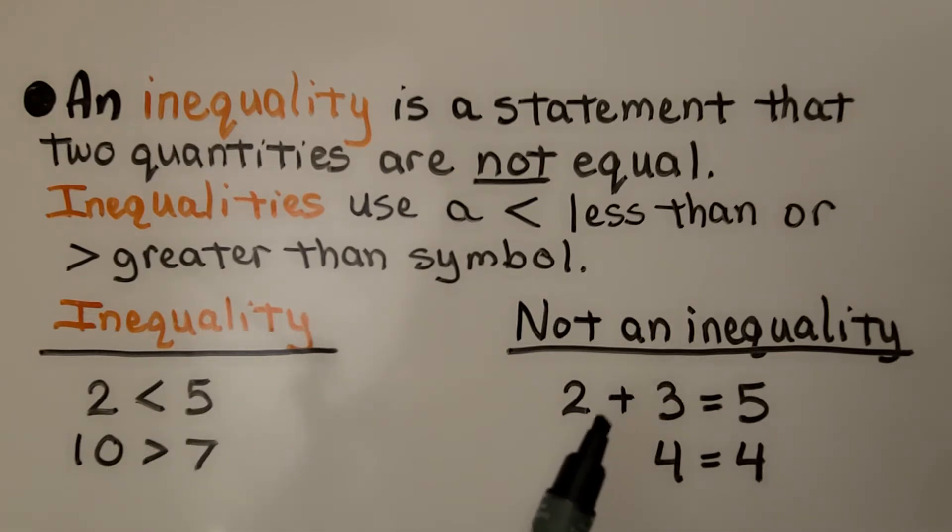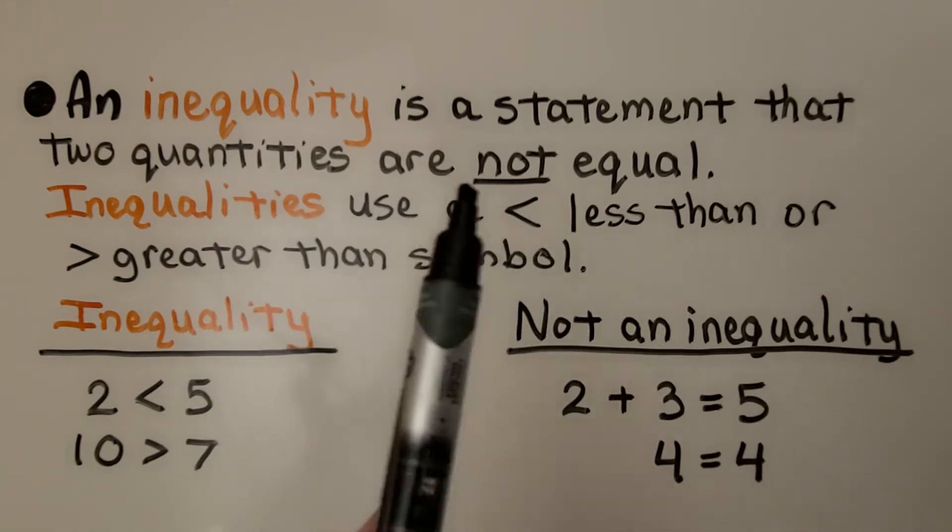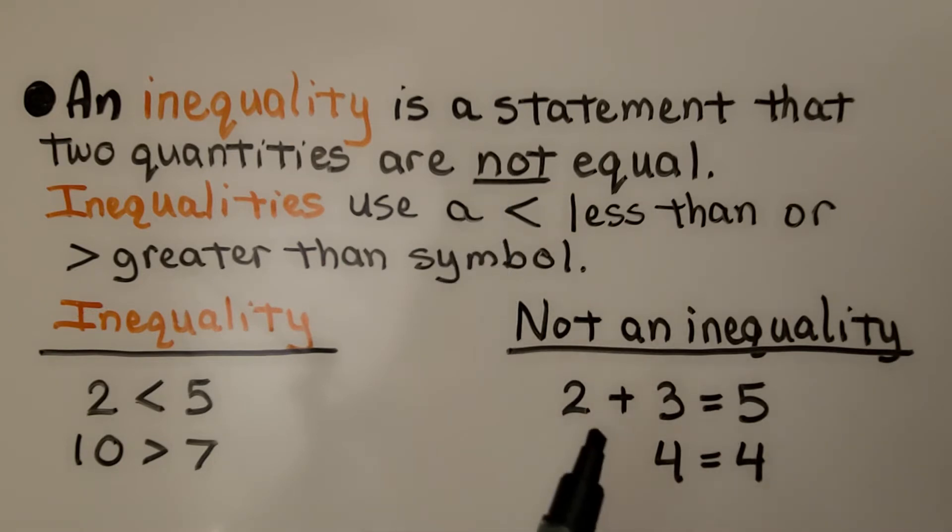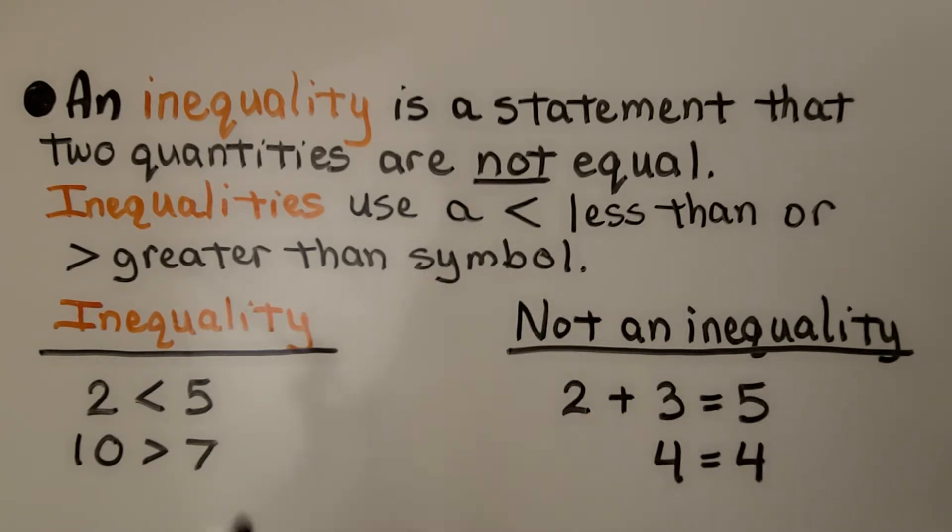But these are not inequalities because remember, it's a statement that two quantities are not equal. So 2 plus 3 equals 5, that's not an inequality, that's an equation. And 4 equals 4, that's not an inequality because they're not supposed to be equal to be an inequality.